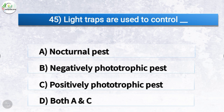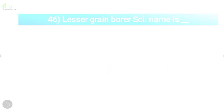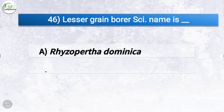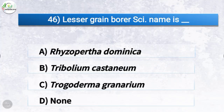Question number forty-five: light traps are used to control which pests? The options are nocturnal pests, negatively phototropic pests, positively phototropic pests, or both A and C. The correct answer is option D, both A and C, which are nocturnal pests and positively phototropic pests. So light traps are used to control nocturnal and positively phototropic pests.